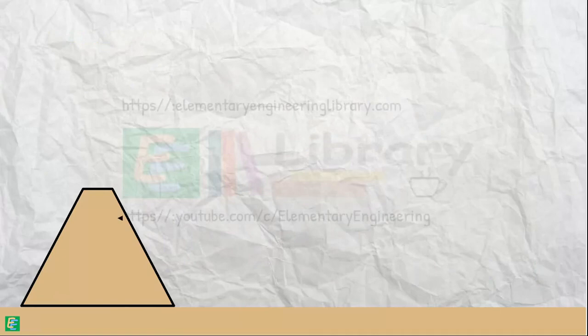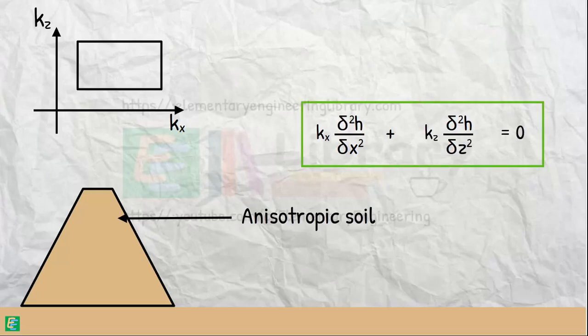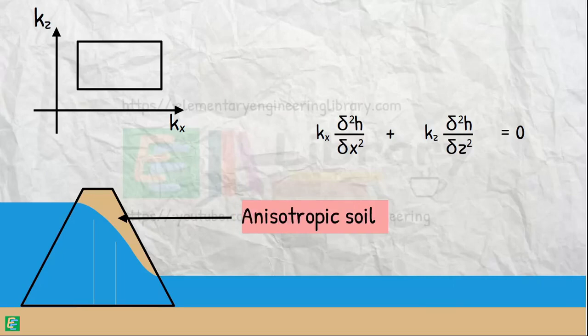And it is anisotropic. If we are somehow able to convert this equation into the Laplace equation, we may find the quantity of seepage through the soil of an earth dam with anisotropic properties.